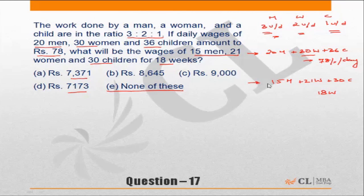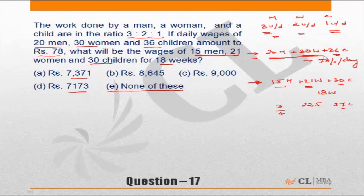Let us compare the two situations: 20 men, 30 women, 36 children versus 15 men, 21 women, 30 children. The men are three-fourths — 15 is three-fourths of 20. Three-fourths of 30 women would be 22.5, so we have slightly less than three-fourths women. Three-fourths of 36 children would be 27, so we have slightly more than three-fourths children. So the second case is approximately three-fourths of the original, meaning the wage should also be approximately three-fourths of 78.